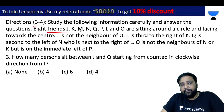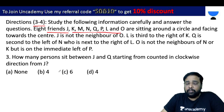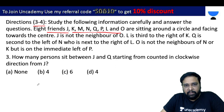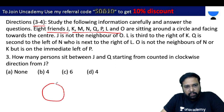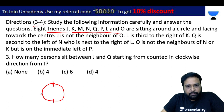Eight friends — J, K, L, M, O, P, Q, R — are sitting around a circular table, facing towards the center.